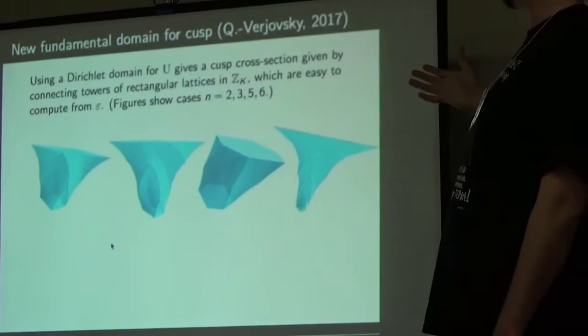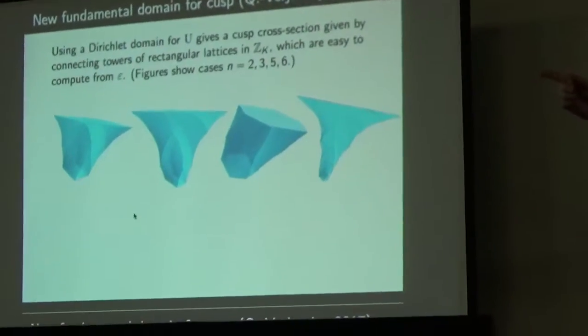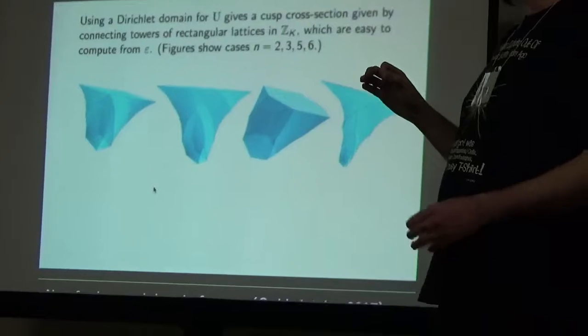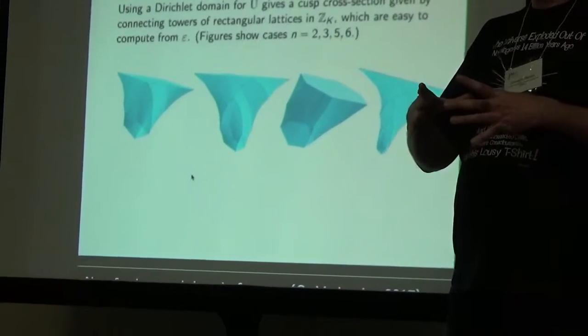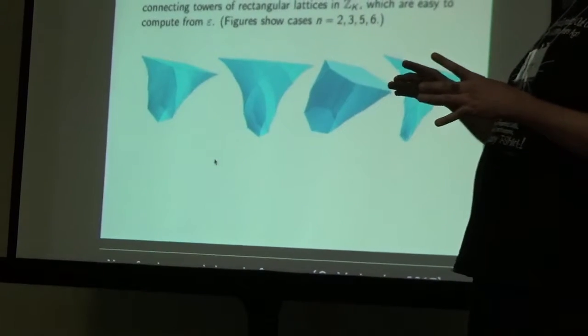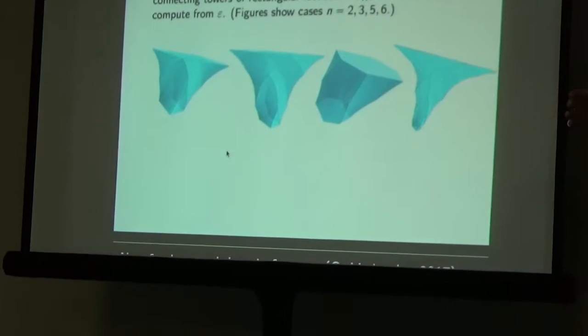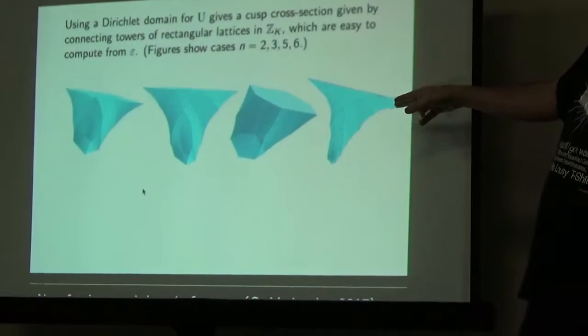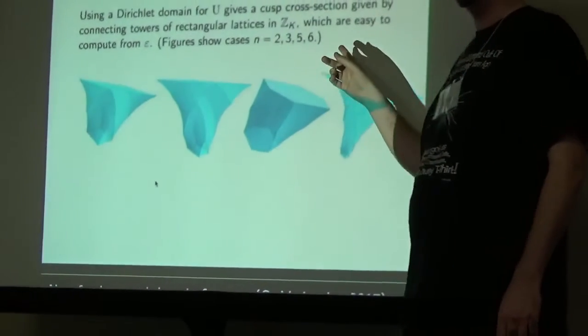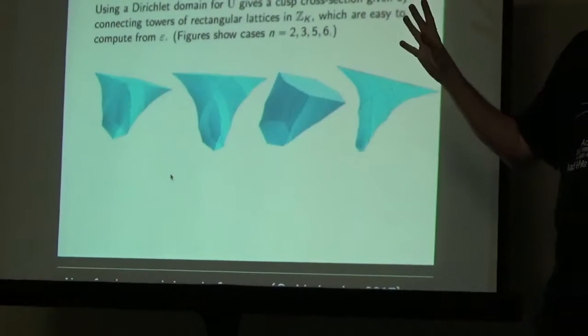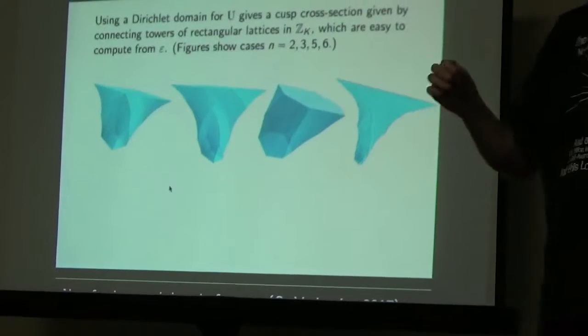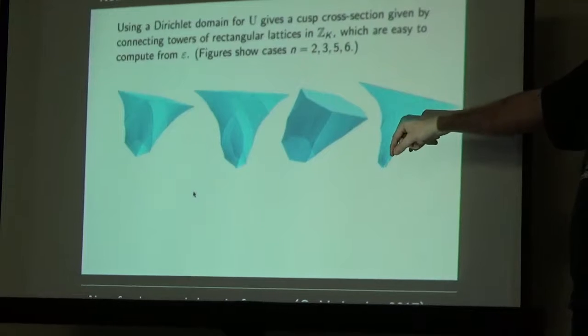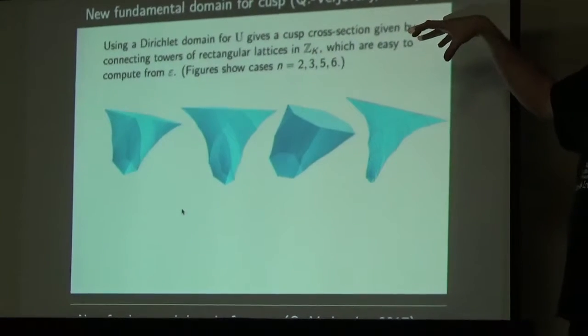As far as the group U, this was the topic of our first paper, essentially. If you use a Dirichlet domain for U, so now instead of just taking the same torus at every point, I'm actually respecting the changes in the metric as the point varies. What you find is that the torus will sort of stretch and elongate, but at every cross-section, it is either a rectangular or hexagonal lattice. It's very efficient algorithmically to just take the fundamental unit and figure out exactly which rectangular lattices you have to connect to get these figures. What we're seeing here is a fundamental domain for the cusp for the first four cases.